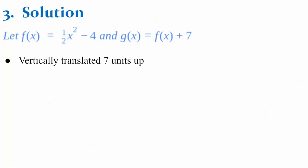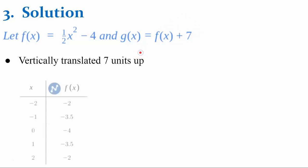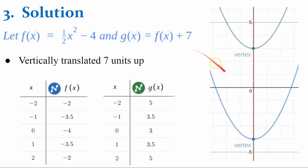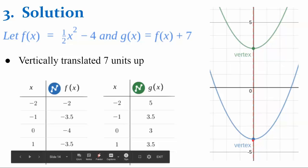Question three asks you to graph and compare. Function g compared to function f has been vertically translated up 7 units — adding 7 to function f vertically translates it 7 units up. Here's my table of values for function f and my table of values for function g, and here they are both graphed on the coordinate plane. Function f is the blue line. Compared to the parent function, it has been vertically shrunk by a factor of one-half and vertically translated down 4 units, so the vertex is at (0, negative 4).